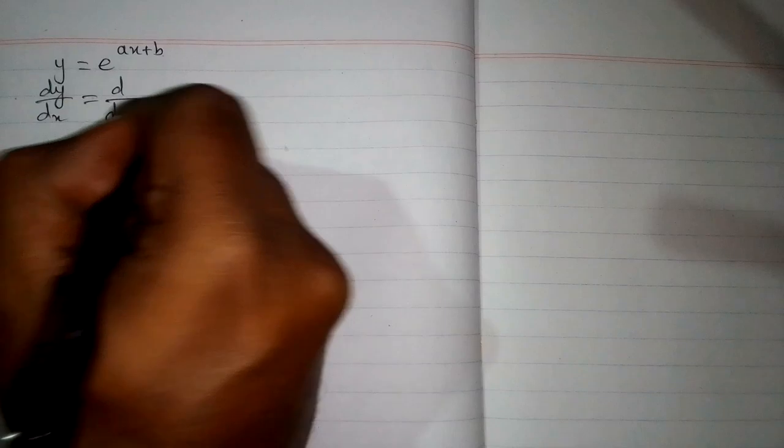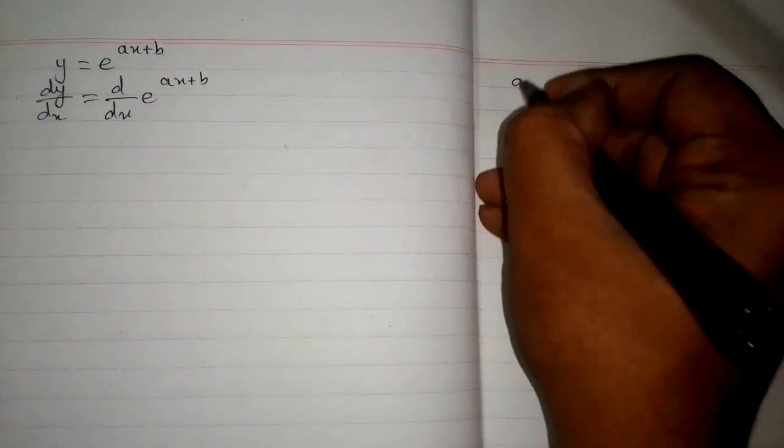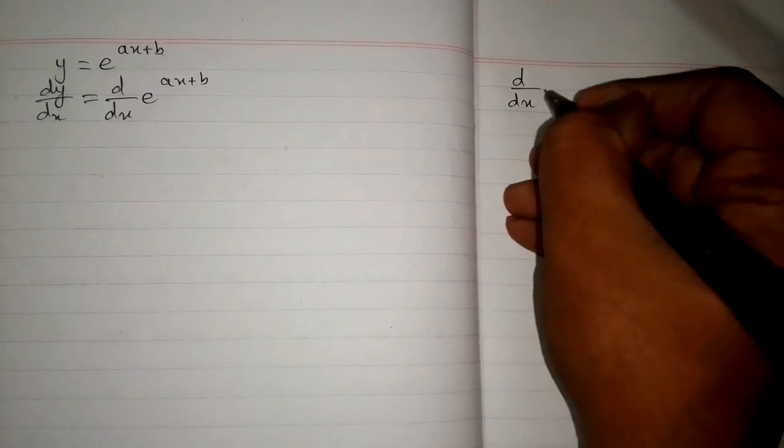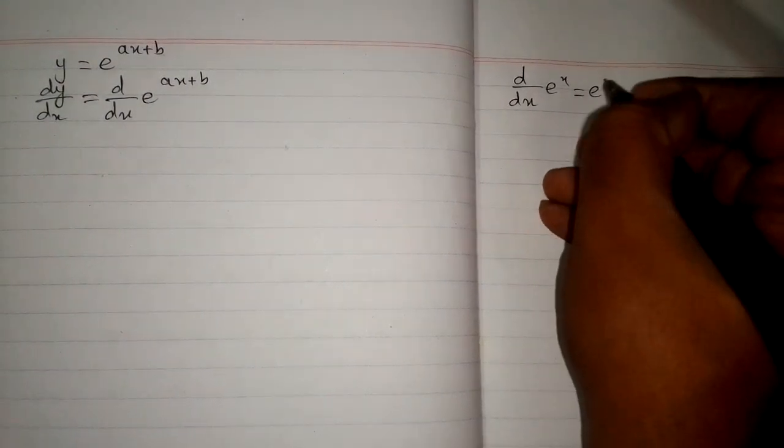So first, dy by dx is equal to d by dx of e to the power ax plus b. We know that the derivative of e to the power x is e to the power x.